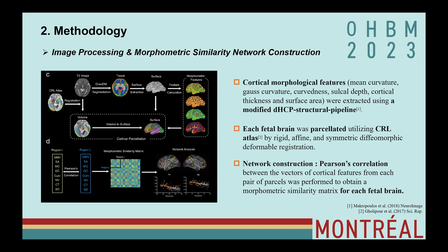A number of cortical morphological features including mean curvature, Gaussian curvature, curvedness, sulcal depth, cortical thickness, and surface area were extracted using a modified DHCP structural pipeline, and each fetal brain was parcellated utilizing a CIL atlas. Pearson's correlation between the vectors of cortical features from each pair of parcels was performed to obtain a morphometric similarity network for each fetal brain.